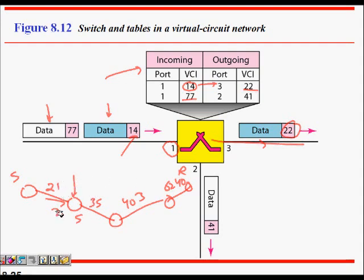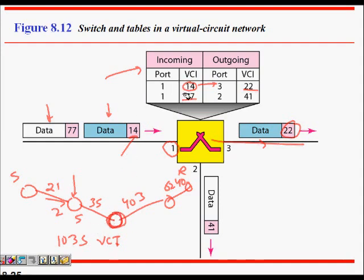You might ask: why are there so many VCIs for one virtual circuit — why should each link have a different identifier? If you chose one VCI, say 1035, for the whole path, a router along the path might already have an existing entry with VCI 1035 and could not allocate it again. Therefore, when the setup request packet arrives, each router decides which available VCI to assign for that link.